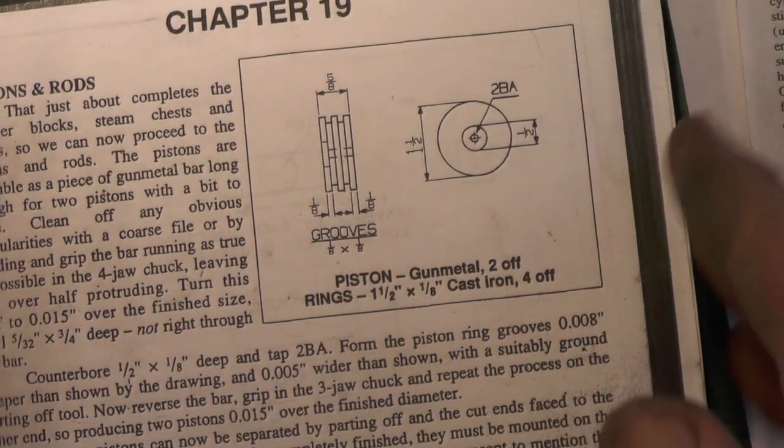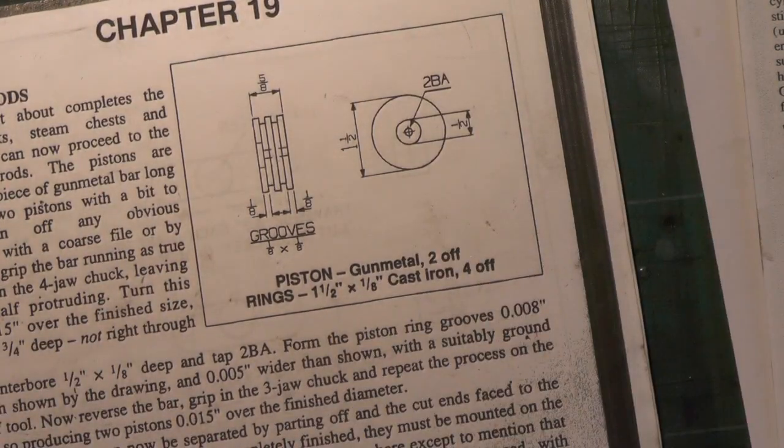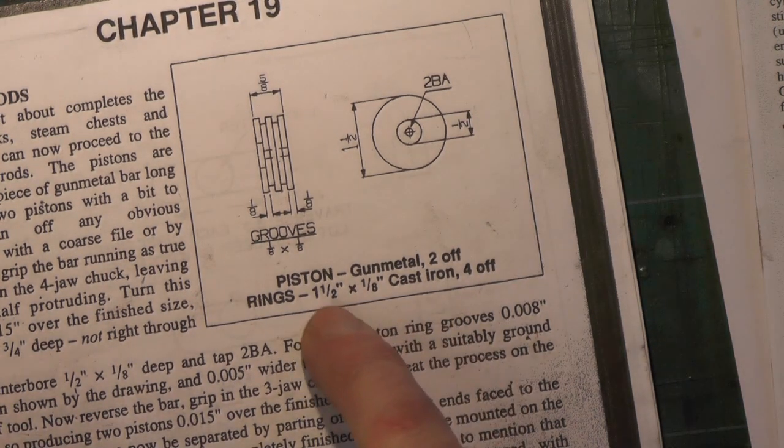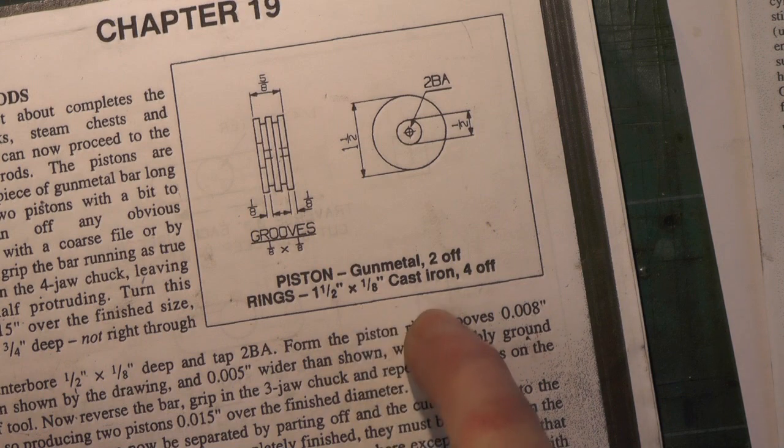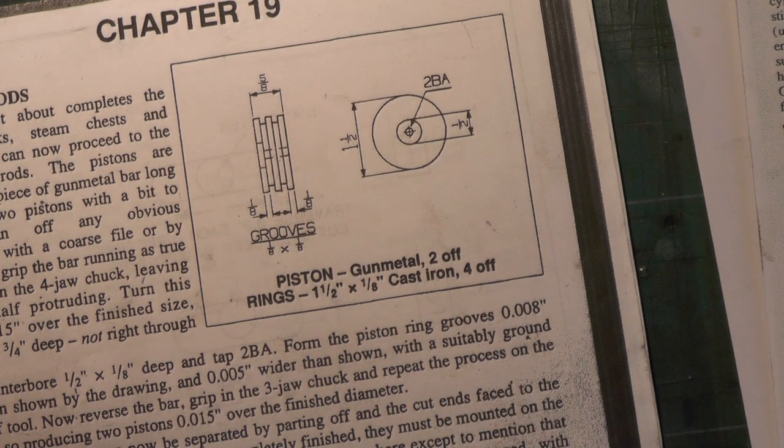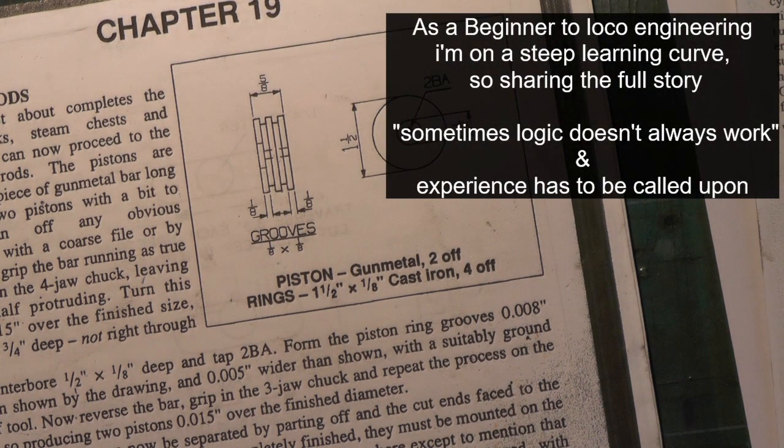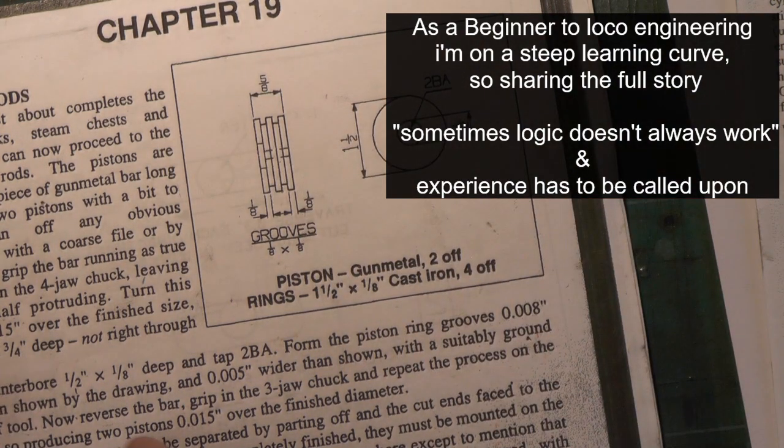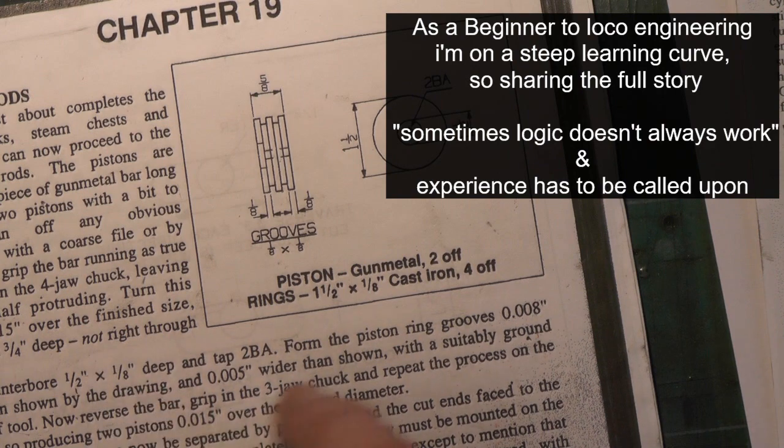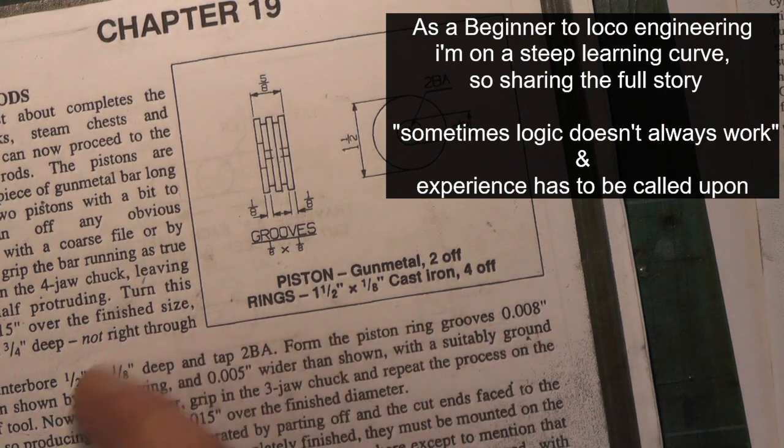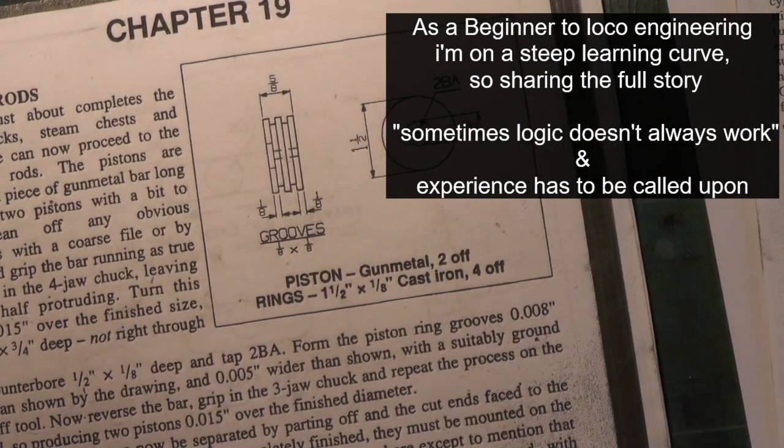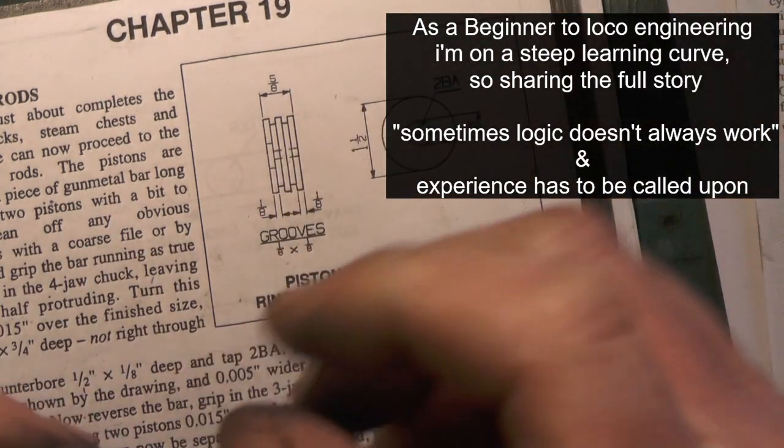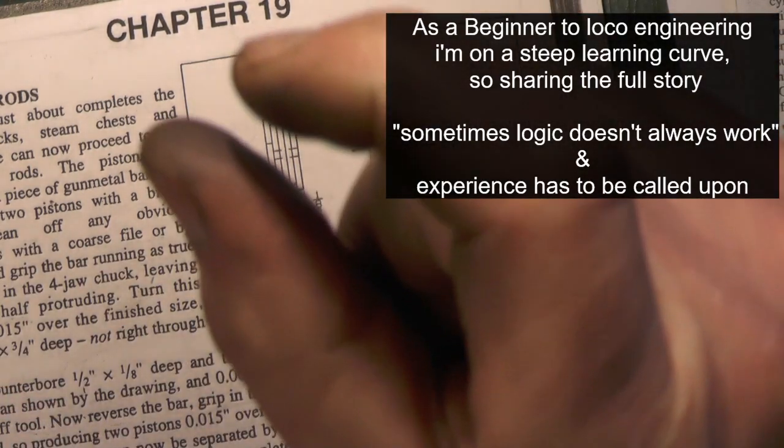In this book that I'm working to, it doesn't give you any information at all about piston rings, only to say that they're 1.5 inch by 1/8 cast iron. I've applied my logic to this, and because the piston grooves are 1/8 wide and 1/8 deep, and in the write-up it tells you to allow a little bit of clearance on that, a few thou, I've assumed that the rings are going to be 1/8 wide and 1/8 thick on the radial thickness.